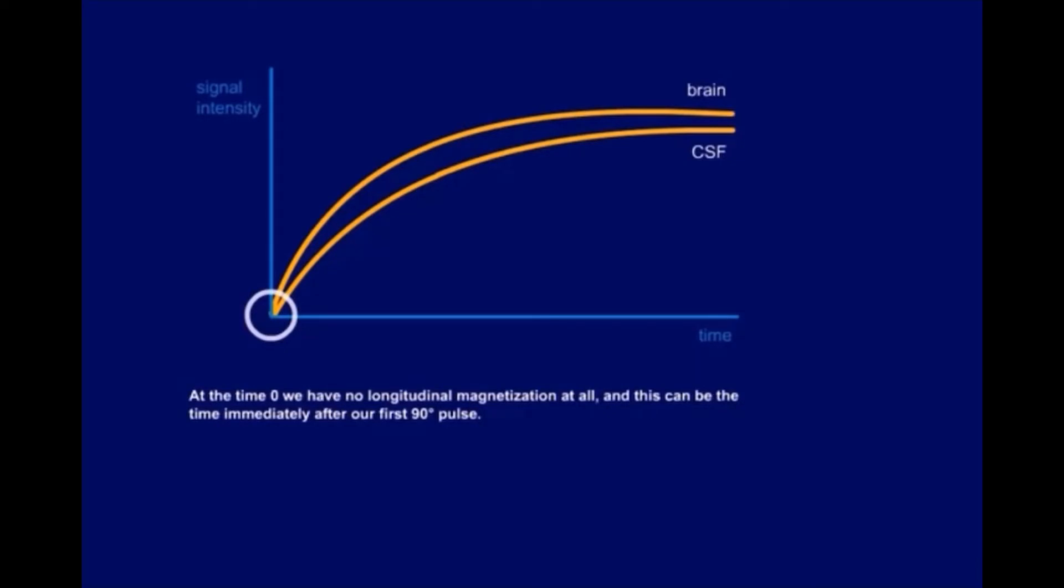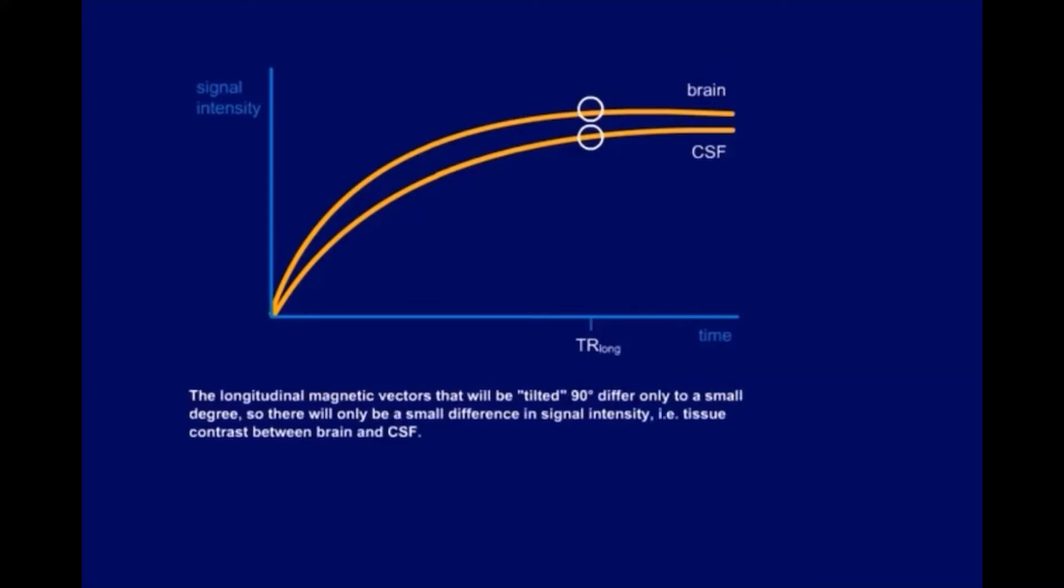When we wait a long time before we repeat the 90 degree pulse, TR long, longitudinal magnetization has pretty much recovered. The longitudinal magnetic vectors that will be tilted 90 degrees differ only to a small degree, so there will only be a small difference in signal intensity, in other words, tissue contrast between brain and CSF.